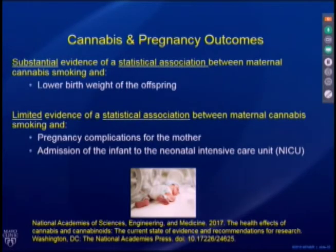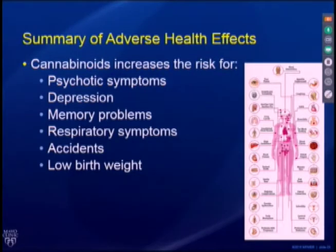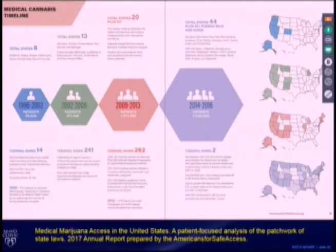In summary, as providers having discussions with patients: cannabinoids may increase the risk for psychotic symptoms, depression, memory problems, respiratory symptoms, accidents, and low birth weight. Now let's talk about the legal considerations for medical cannabis in the United States. The number of patients using medical cannabis is exploding — from about 50,000 patients in 1996 to 2002, up to two million patients by 2016. Americans for Safe Access rates all state cannabis programs on various domains including how well laws protect patients from eviction or arrest.